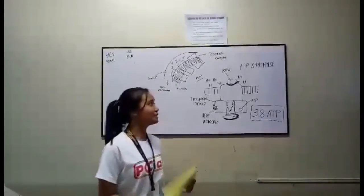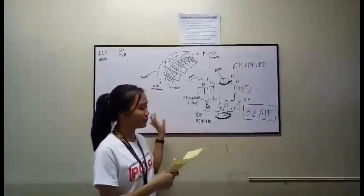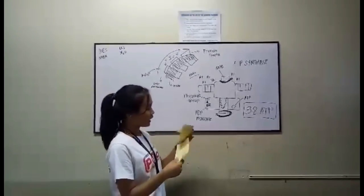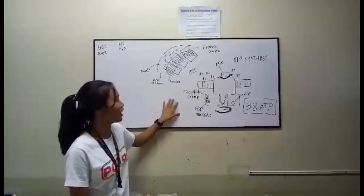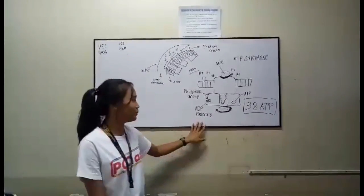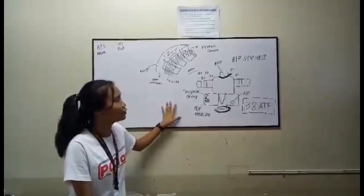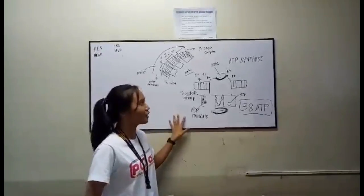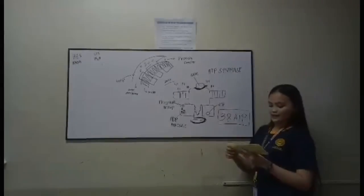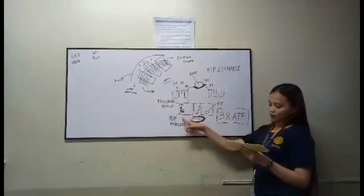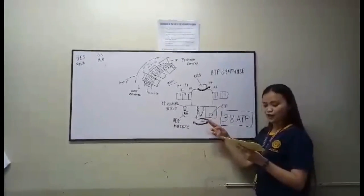In ATP synthesis, the hydrogen protons will enter the ATP synthase. Also present in ATP synthesis are the phosphate group and the ADP molecules. Using the proton gradient, the rotor of the ATP synthase will spin. After that, the ADP molecules and the phosphate group will collide and combine to produce ATP.